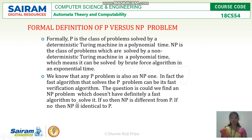The question is: can we find an NP problem which has a verification algorithm to check the correctness of the solution, but which doesn't definitely have a fast algorithm to solve it? If so, then NP is different from P.